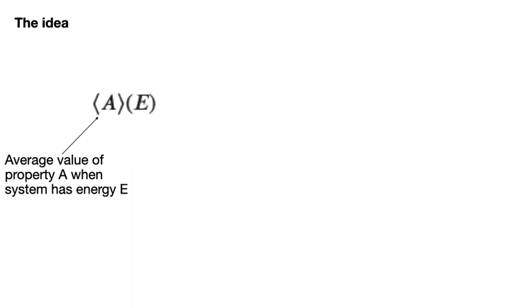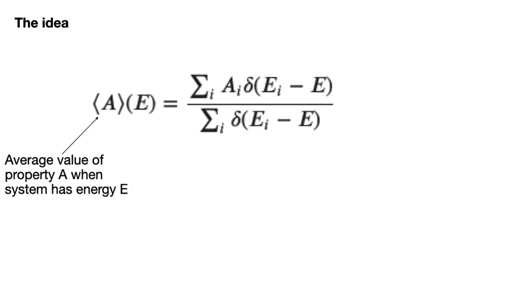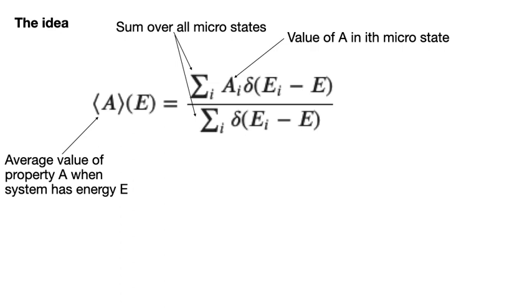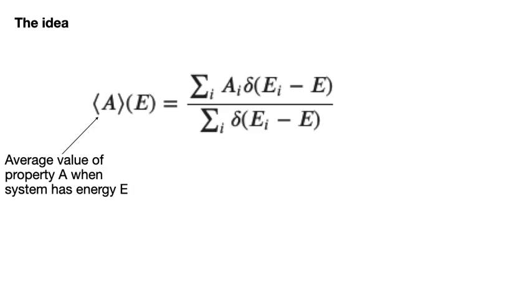The reason we need to be able to calculate A for each microstate is that the ensemble average is given by this expression. In this expression the sums run over all the microstates the system can be in. A_i is the value of the property A for the i-th microstate. Lastly the delta that appears in the numerator and denominator is a Kronecker delta which is one if E_i is equal to E and is zero otherwise. This whole expression is thus just a fancy way of saying that the average value of the property A when the energy is E can be calculated by taking the n states that have an energy of E and adding together all their A values and then dividing this by n.